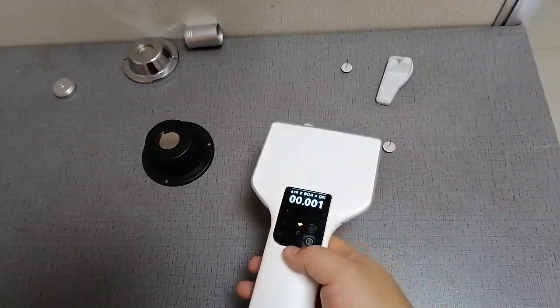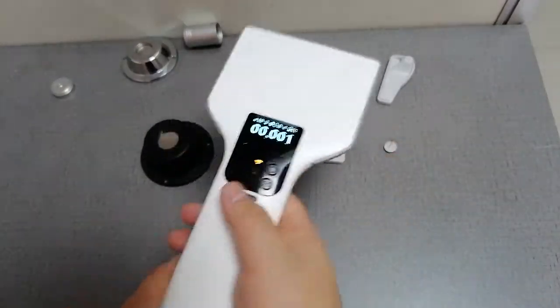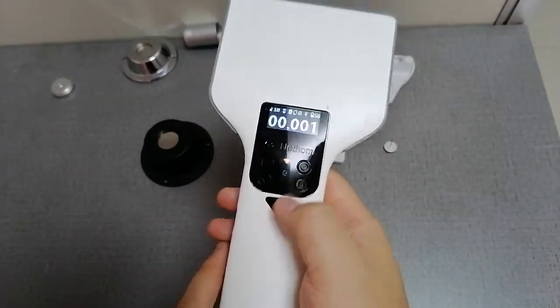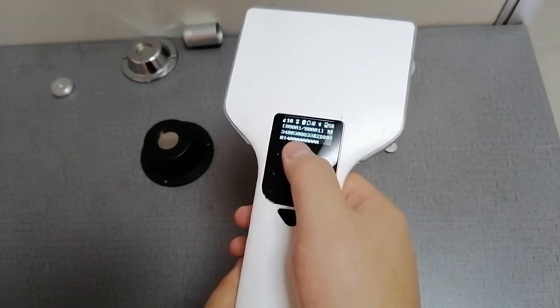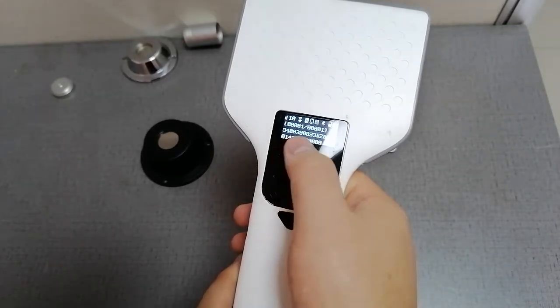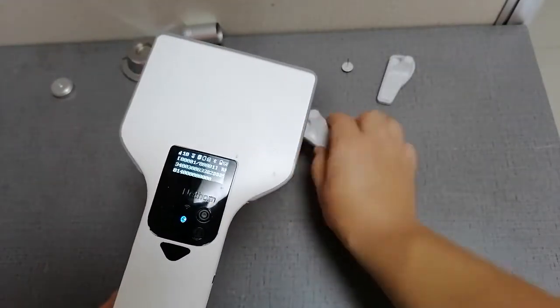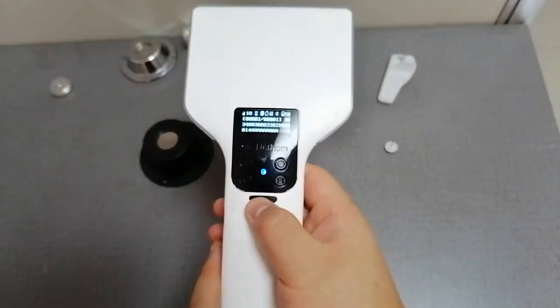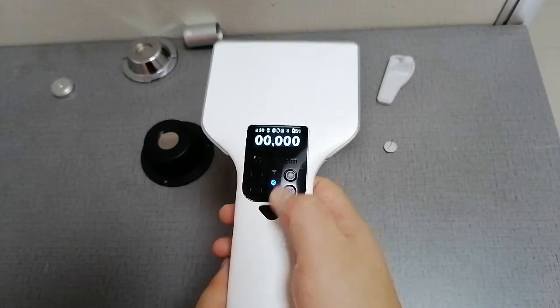Actually there are two tags here, but because the EPC is exactly the same, you just detect one tag here. So we can check this one's EPC. You can also remove this one to see the tag's EPC.